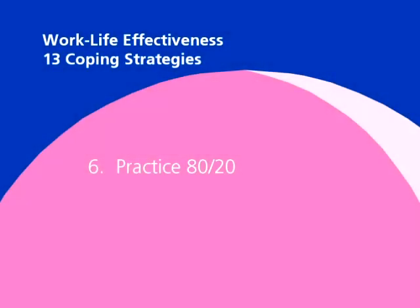Number six is practice 80 for 20. Now, my fourth observation: every perfectionist I've met in P&G has a work-life balance issue problem because they don't know when to stop.